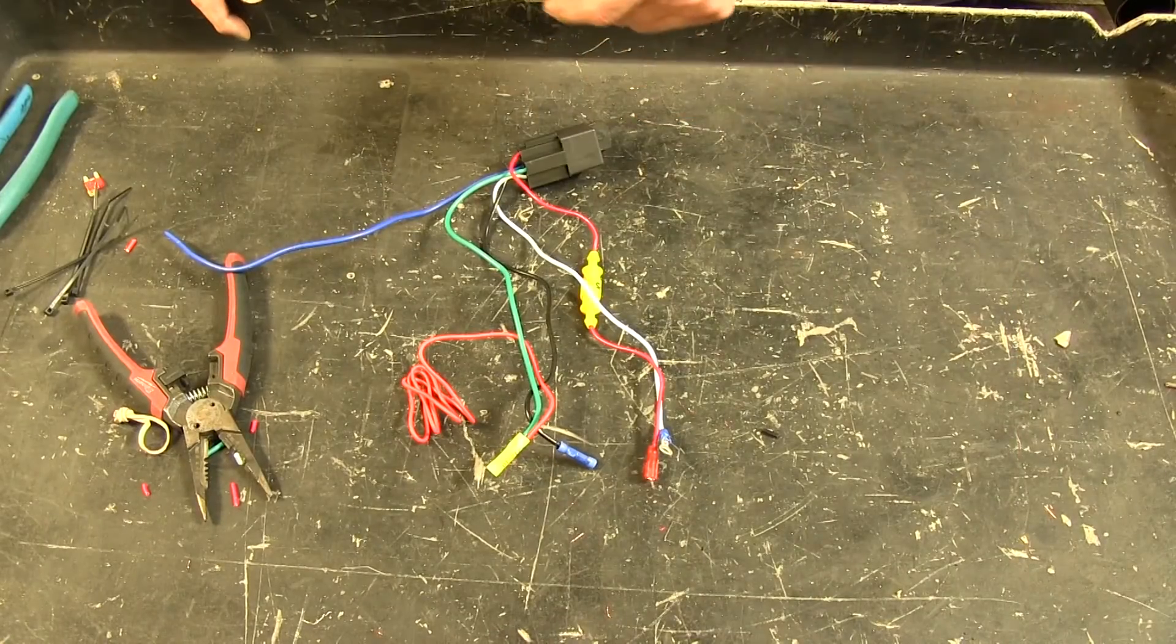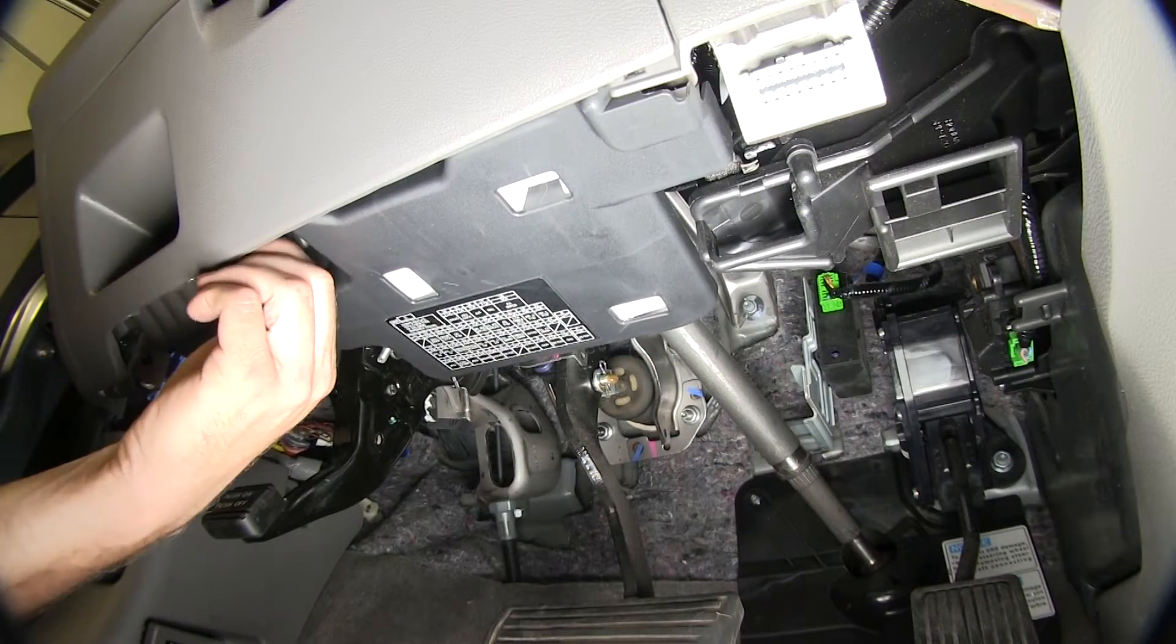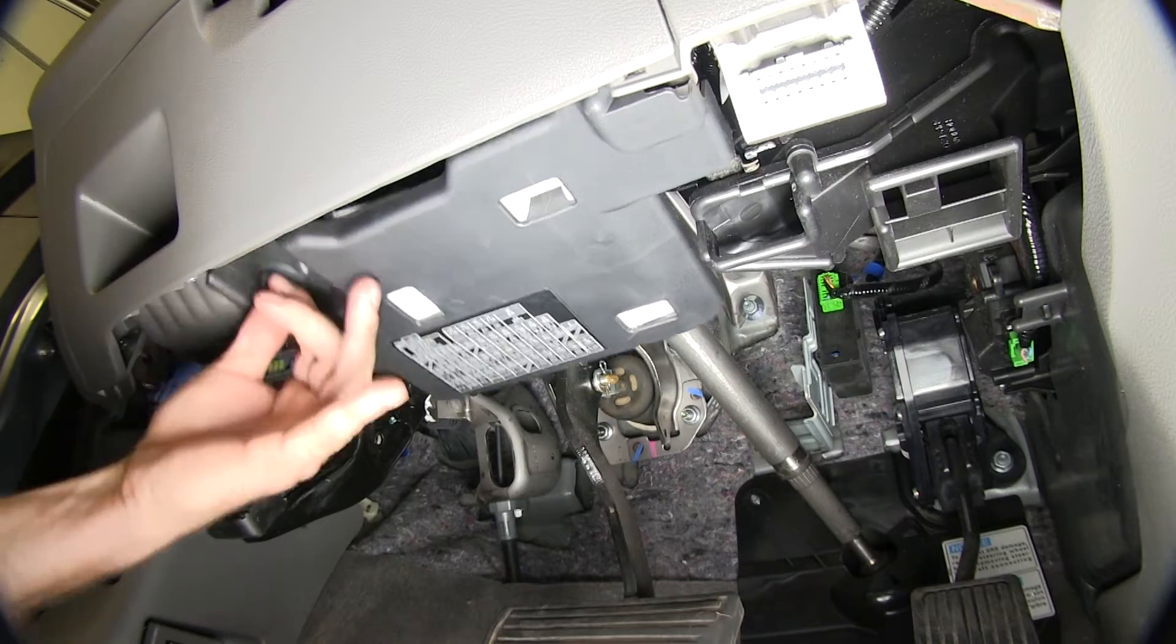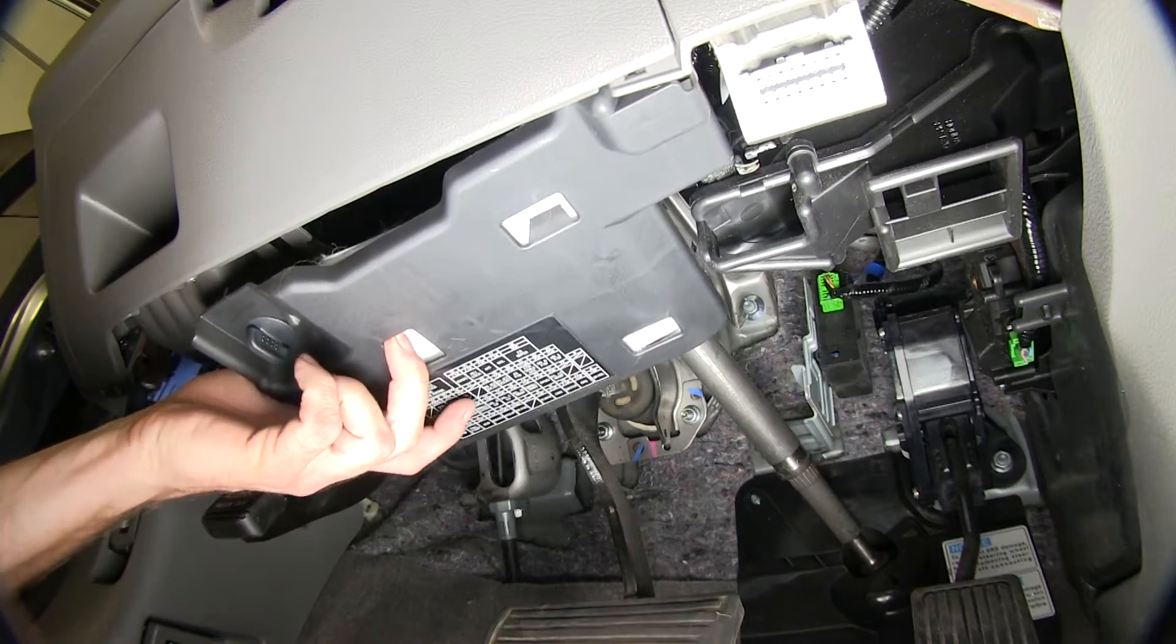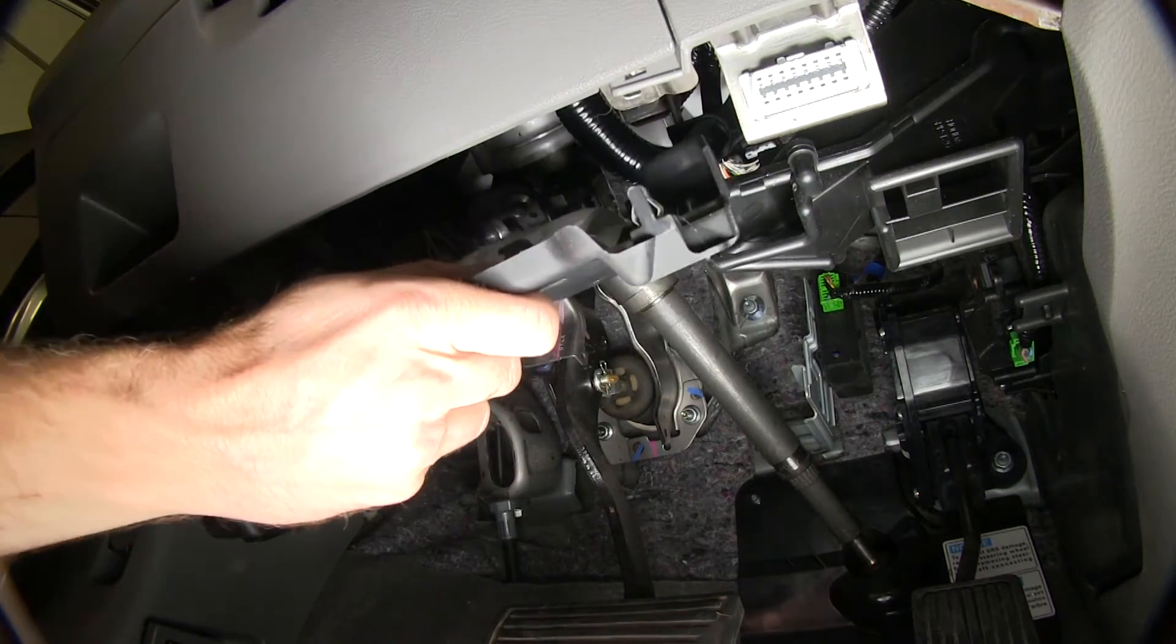Next we'll go underneath the dashboard. Now to start off, we need to remove this panel and get access to our switch and a little extra room to get access to our fuses as well. Just pops down out of the way.